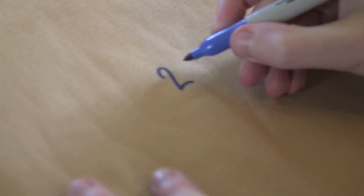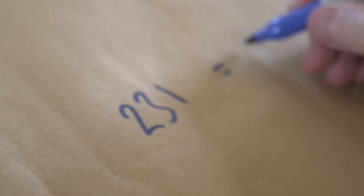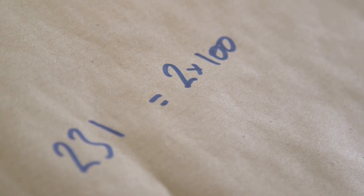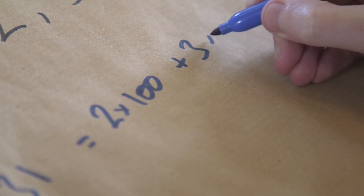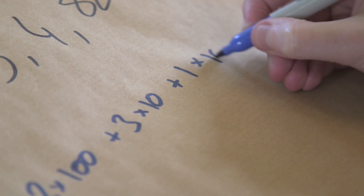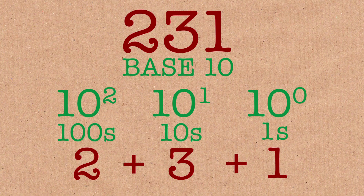Normally, we use base 10. Base 10 means, well, if I took a number like 231, then what that means is we are doing 2 lots of 100, which is actually 10 squared. We then add on 3 lots of 10 itself, and then we add on 1 lot of 10 to the 0. So 1 lot of 1 — 10 to the 0 is 1. That's how regular numbers work. It's powers of 10 that we're adding together. But there's nothing special about the number 10, so we can do this with any number.